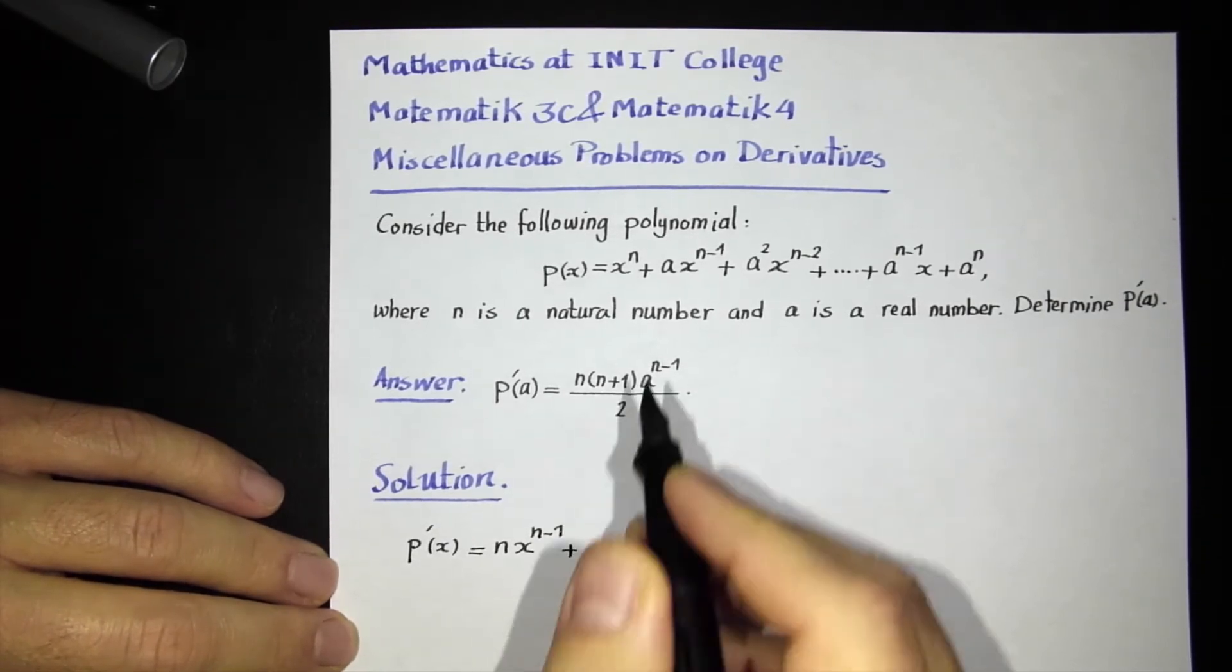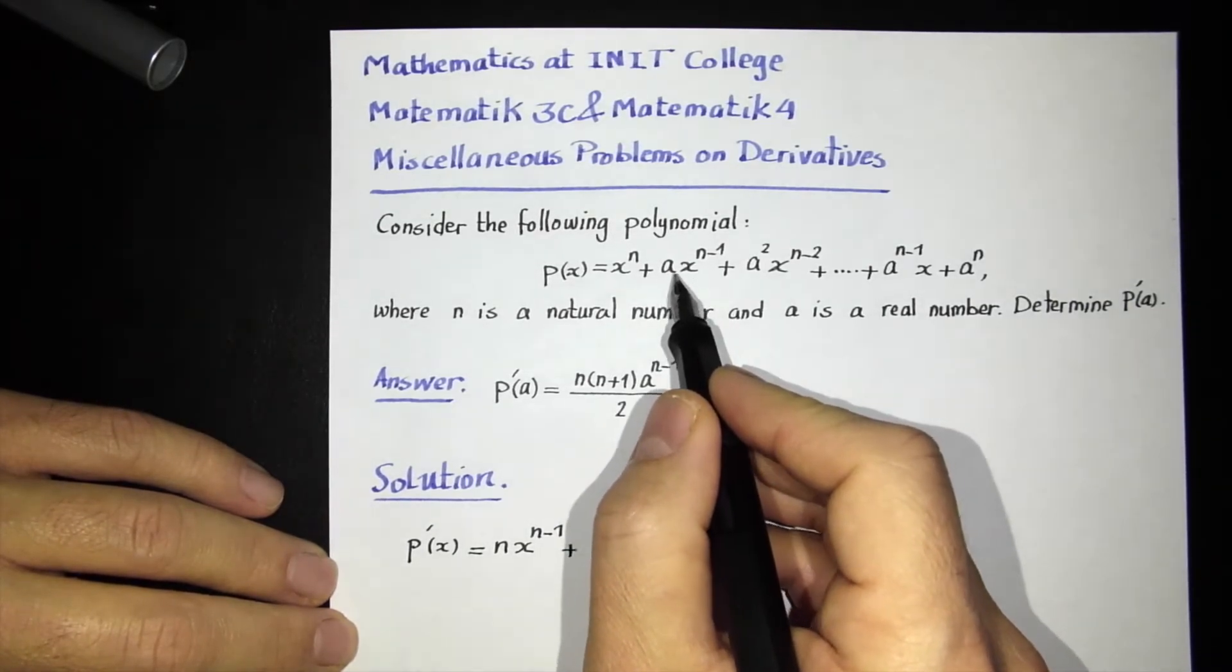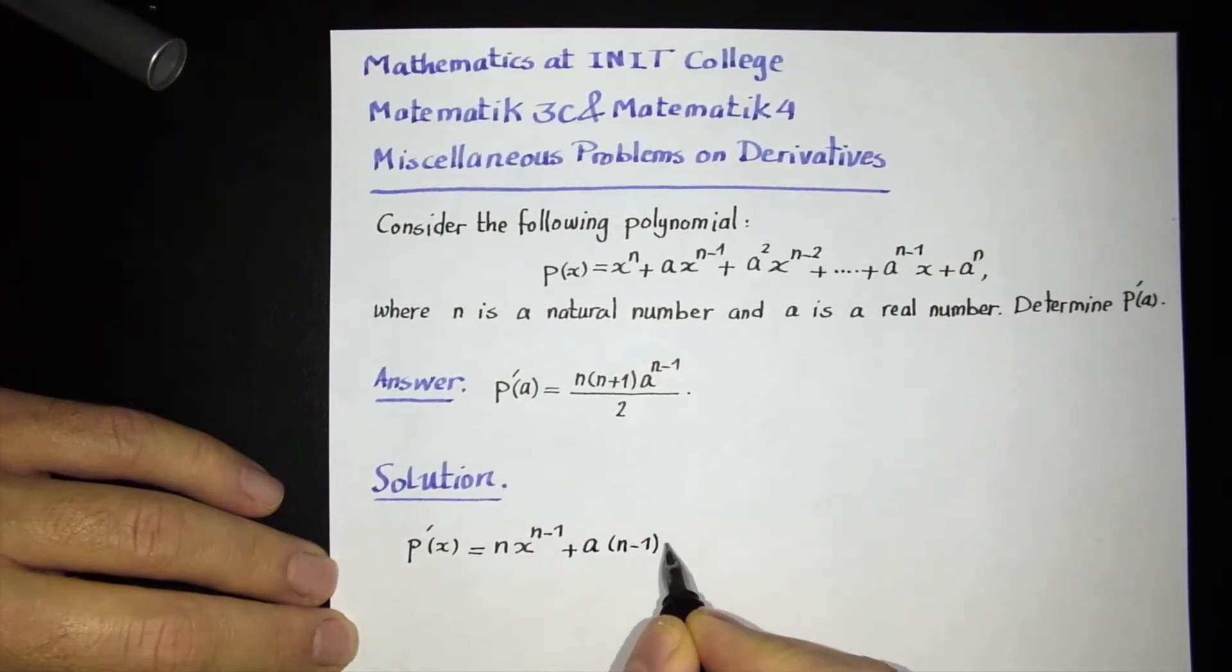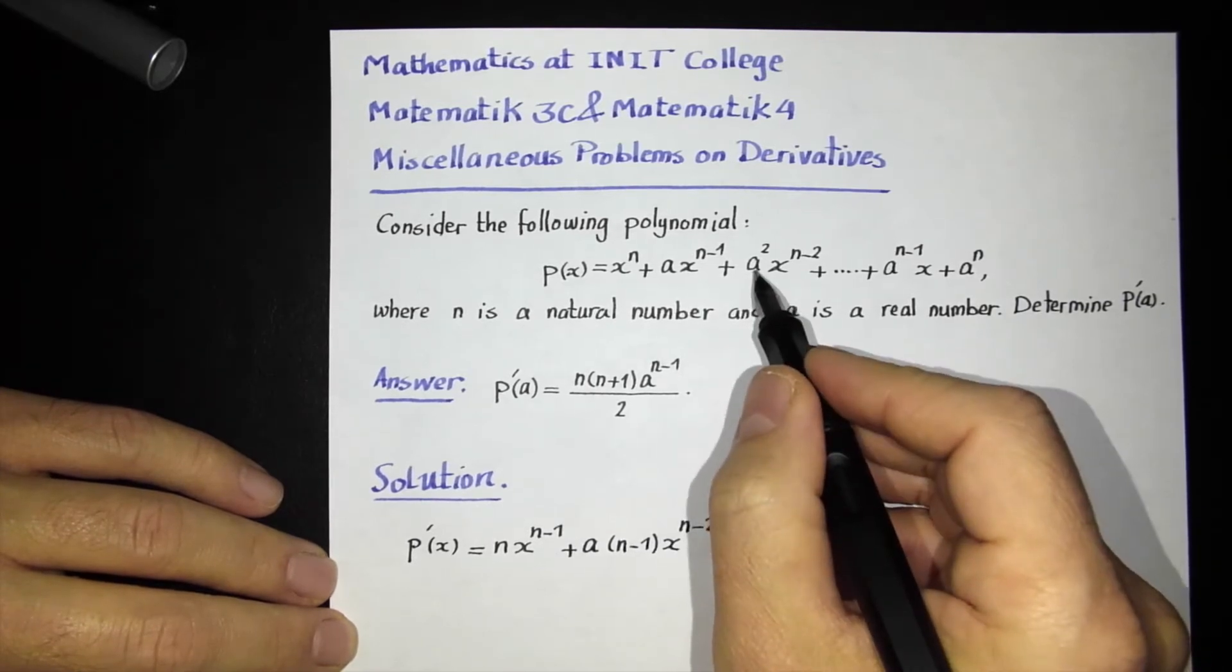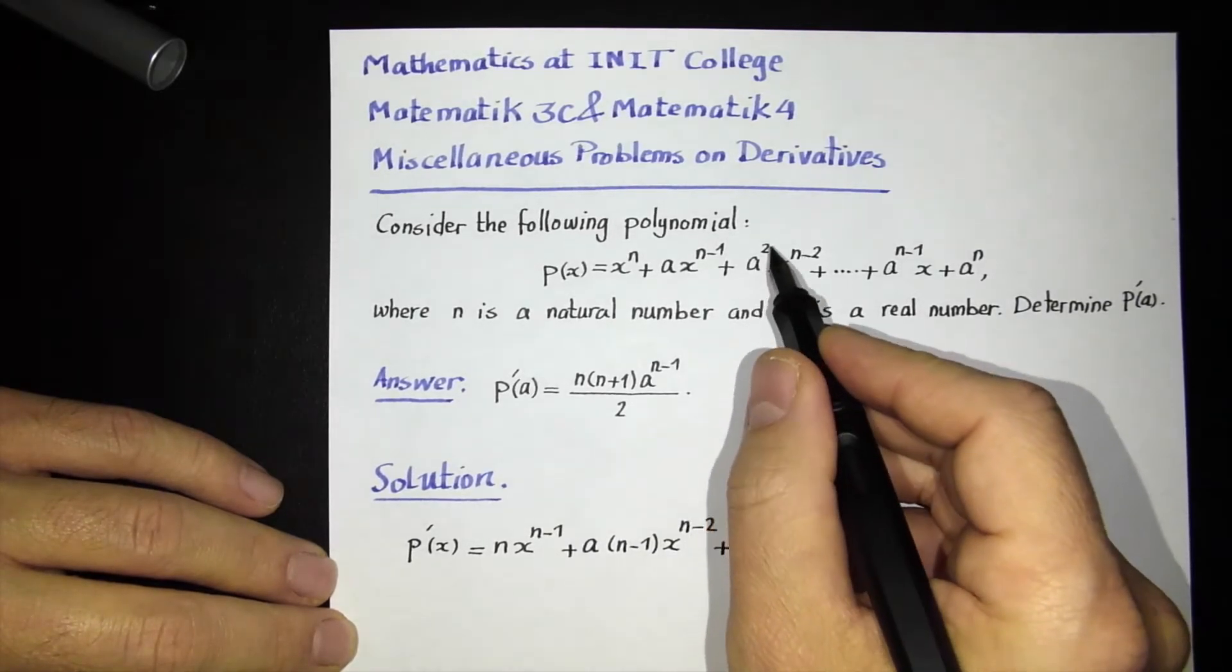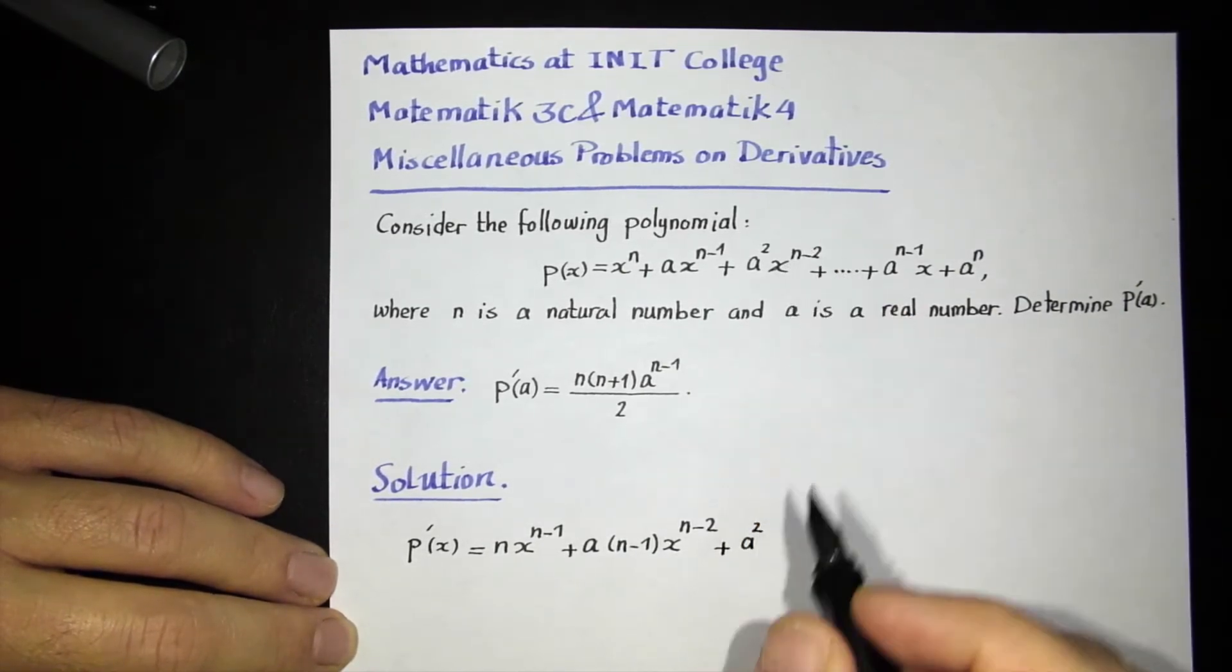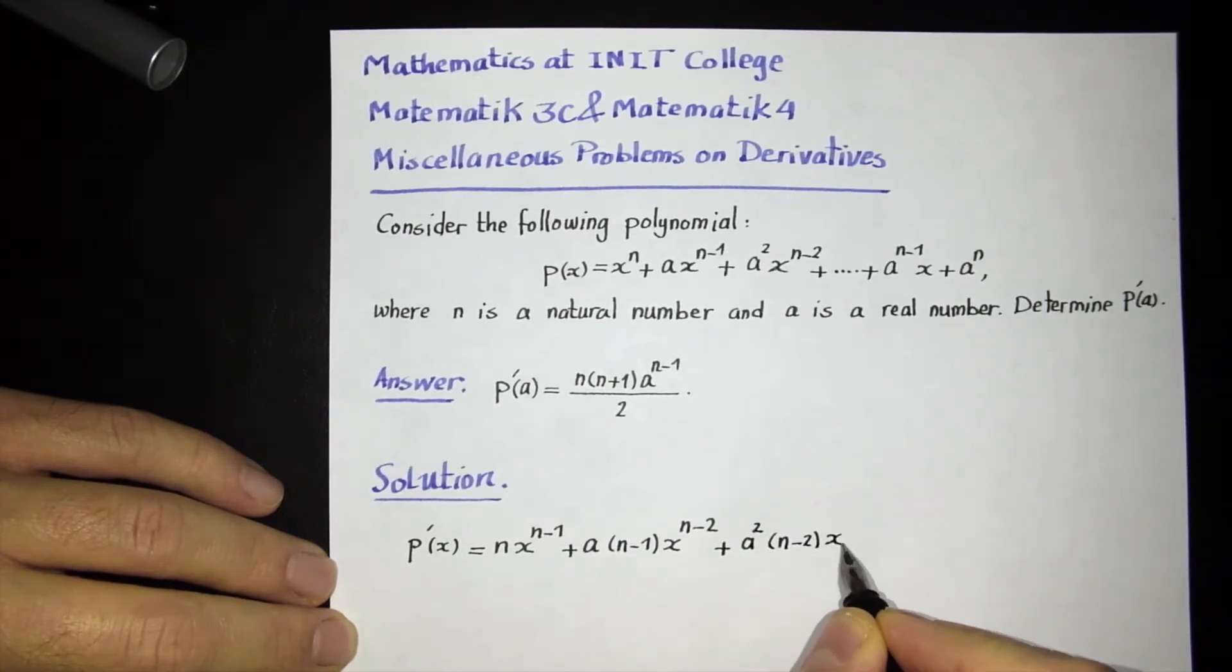The next term, I have a constant coefficient a multiplied by a function, so this multiplicative constant, I just write it down a, and I differentiate the next term. So n minus 1 goes down, and then x to the 1 unit less, which becomes n minus 2. When I go to the next one, I do the same thing. Here the constant, the multiplicative constant is a squared, so I write a squared here. Then I differentiate this one, which becomes (n-2) times x to the n minus 3.